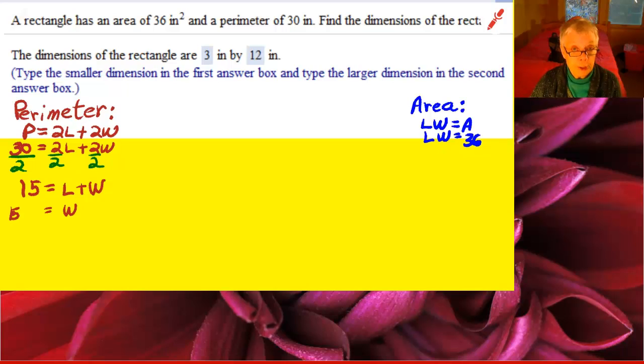Now come back over to the perimeter formula and we'll find that W equals 15 minus L. I'm going to substitute that value for the W in the area formula.